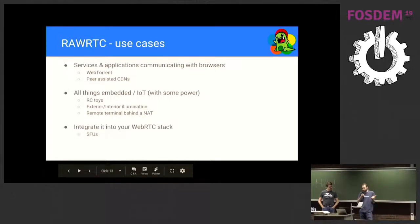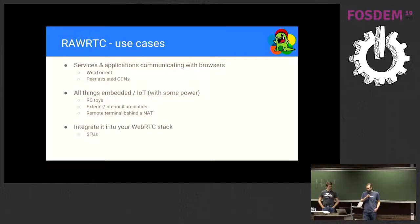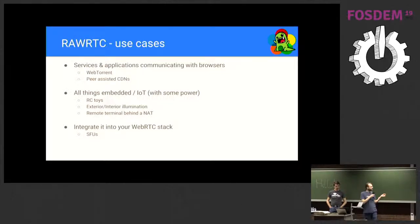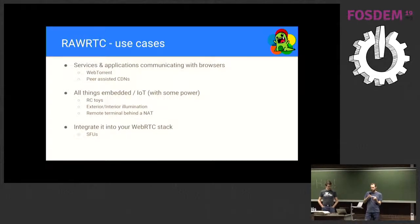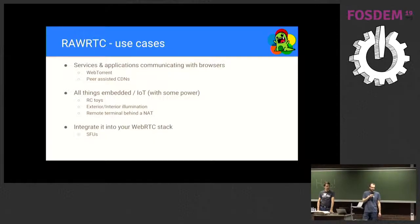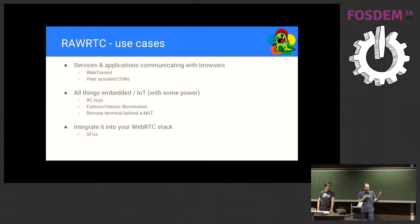Since raw RTC is an existing implementation, you can also use it for your own applications and services. One interesting use case I've seen is integrating it into an existing torrent library to implement WebTorrent. Another is peer-assisted CDNs, where you reduce peak load by sending data via peer-to-peer. There are also embedded use cases — we made an example where you can control a Lego Mindstorms robot with it. IoT use cases are covered as well, such as exterior and interior illumination control.